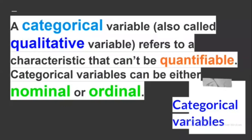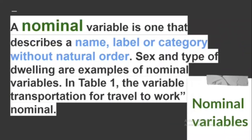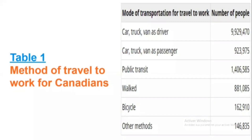A categorical variable, also called a qualitative variable, refers to a characteristic that can't be quantified. Categorical variables can be either nominal or ordinal. A nominal variable is one that describes a name, label, or category without natural order. Sex and type of dwelling are examples of nominal variables. In Table 1, the variable mode of transportation for travel to work is also nominal.